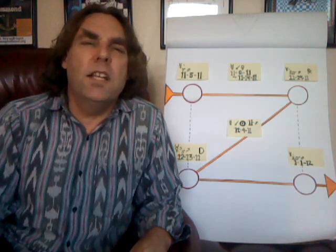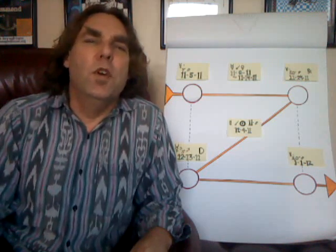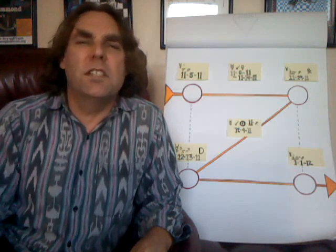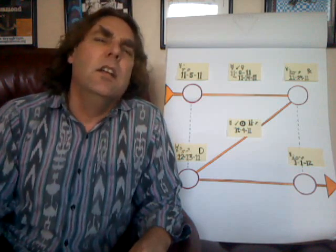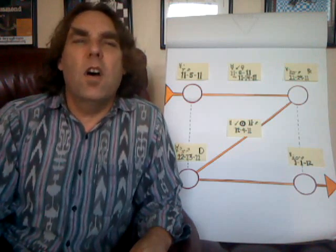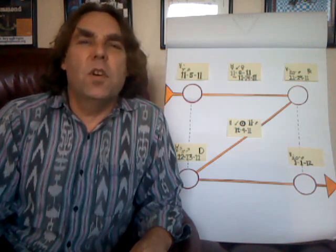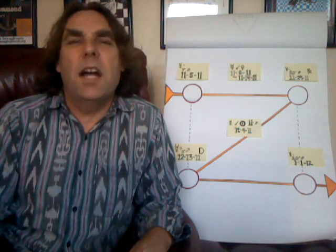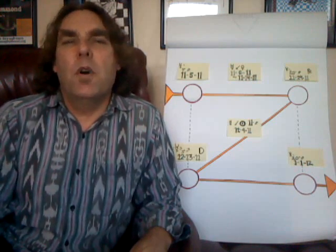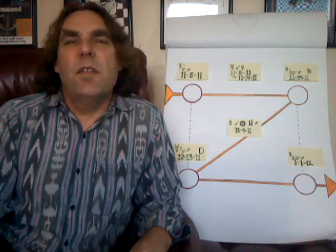November 28th is Five Monkey, which is being empowered in new beginnings, with the moon being challenged by Saturn, which may bring some lonely feelings at some point during that day. The 29th is Six Road, which is being in the flow through being in service to others. The moon moves into Aquarius and is stimulated by Uranus and the Sun and challenged by Jupiter, which may be a day of emotional ups and downs.